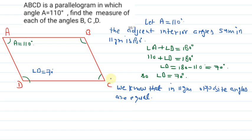So we can conclude that angle A is equal to angle C and angle D is equal to angle B. So we can say that angle C is equal to 110 degree and angle B is equal to 70 degree.